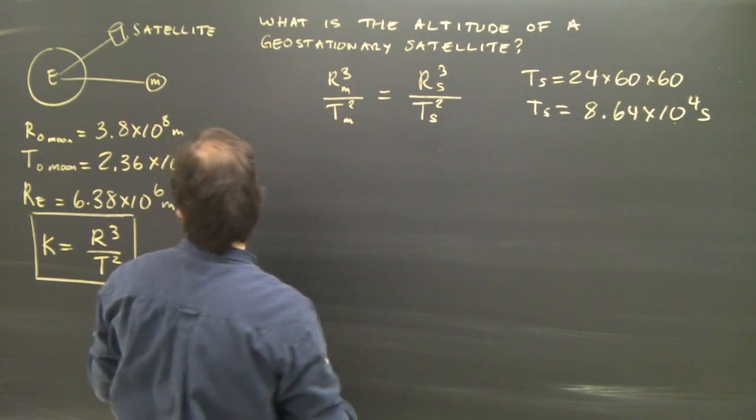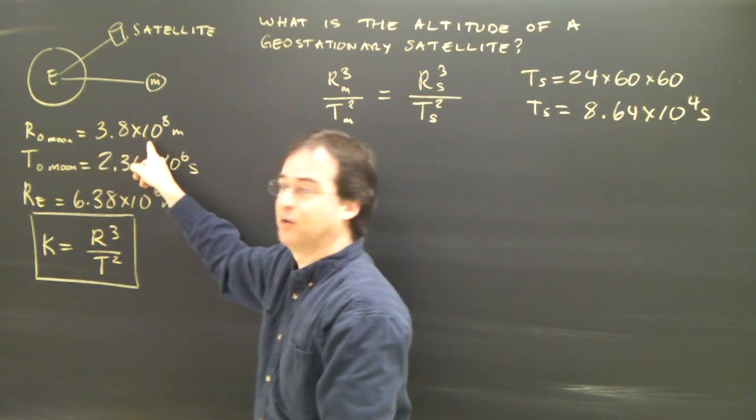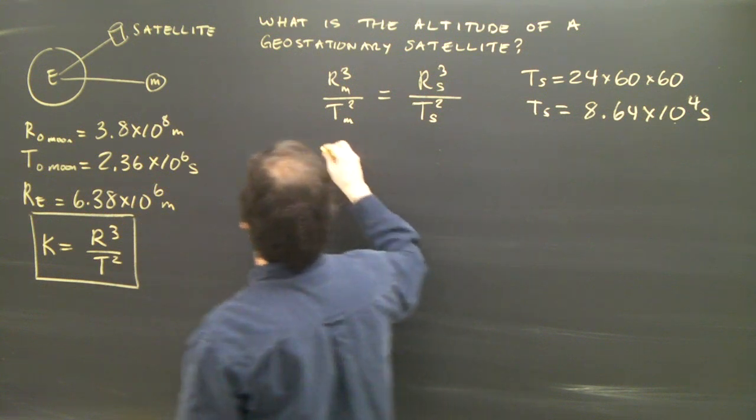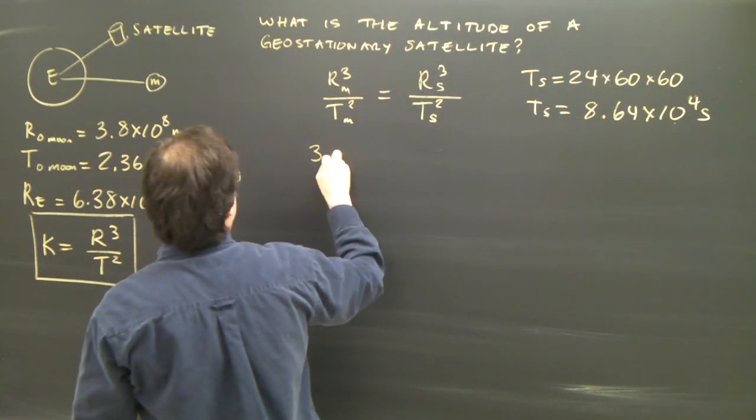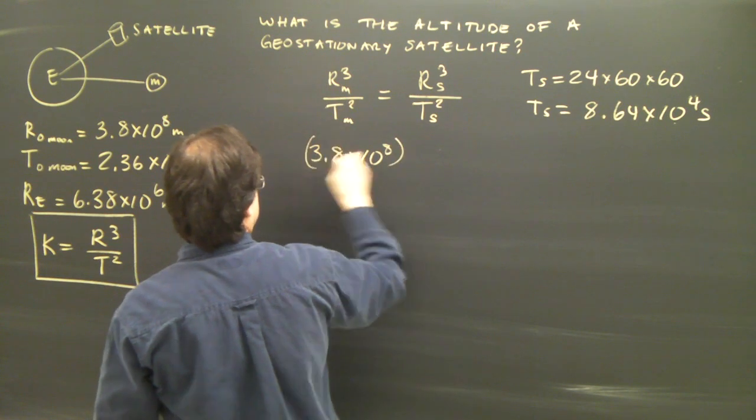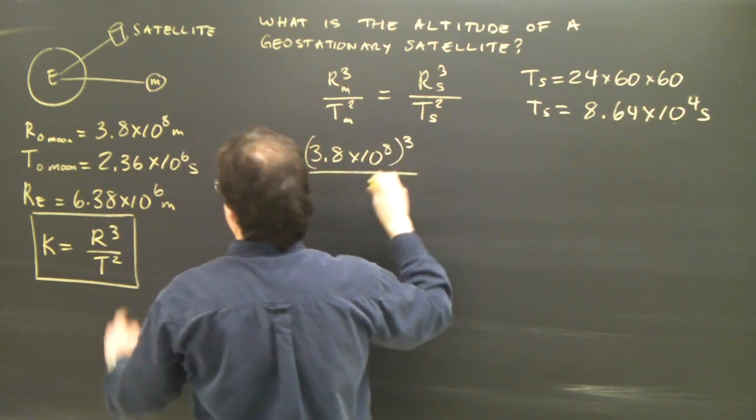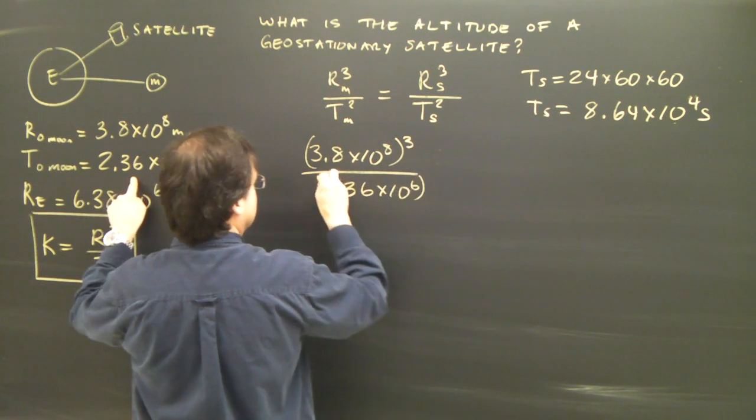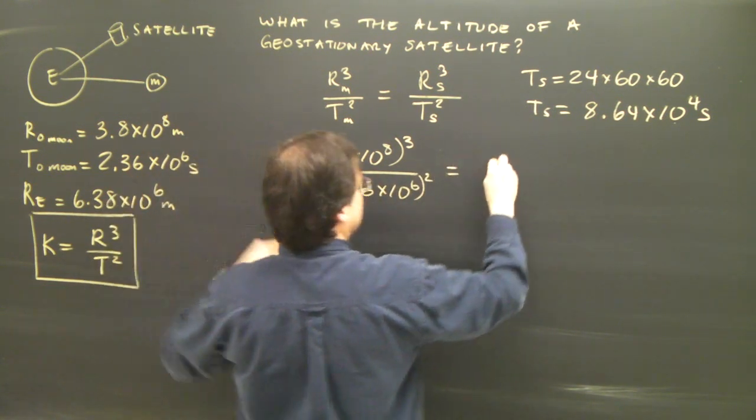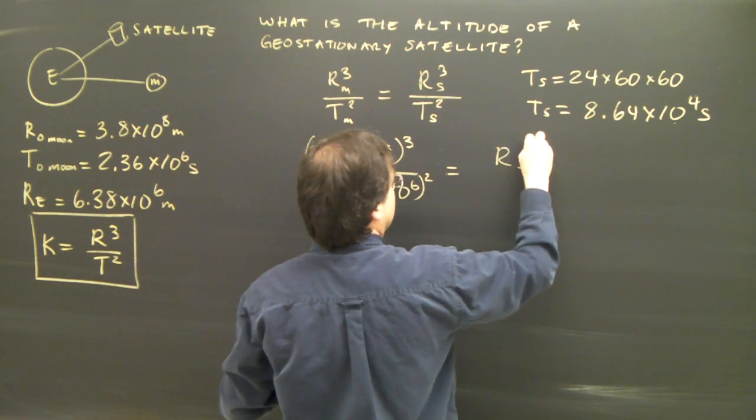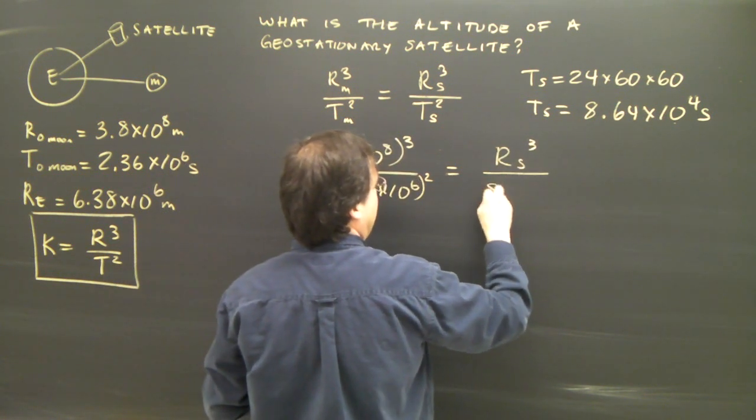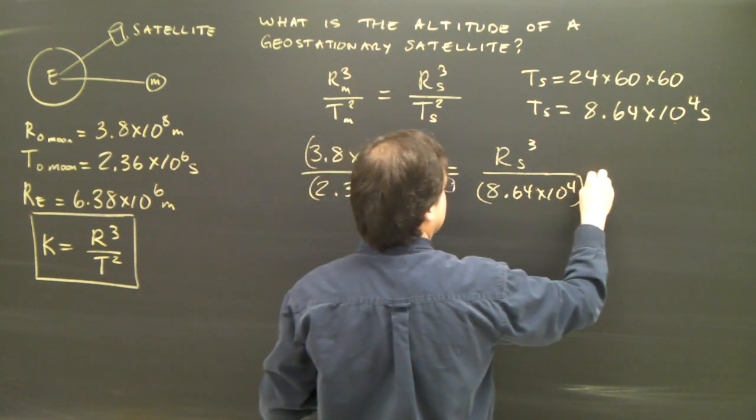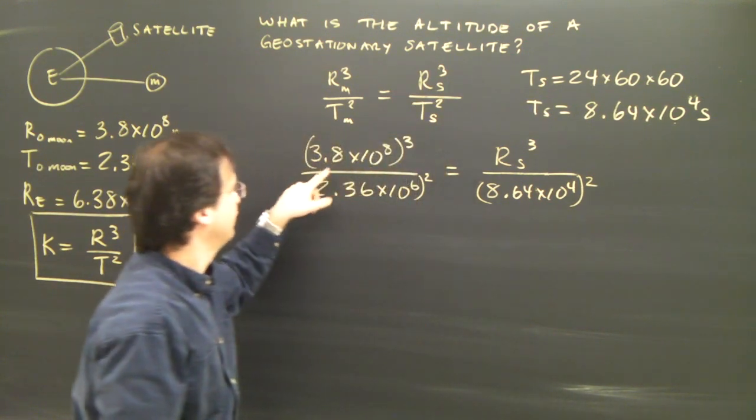So let's plug all our numbers here. We know the radius of orbit for the moon. That was given. We know the period of the moon in seconds. So we've got 3.8 times 10 to the 8 cubed over 2.36 times 10 to the 6 squared equals what we're looking for, r of the satellite cubed divided by 8.64 times 10 to the 4, and that is squared.